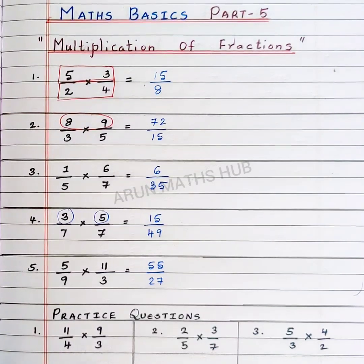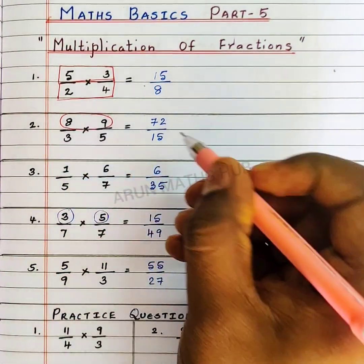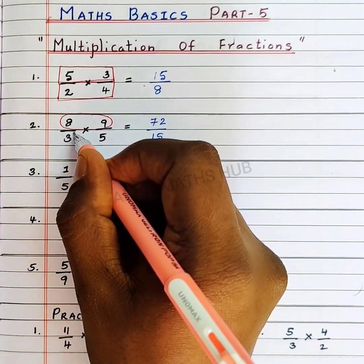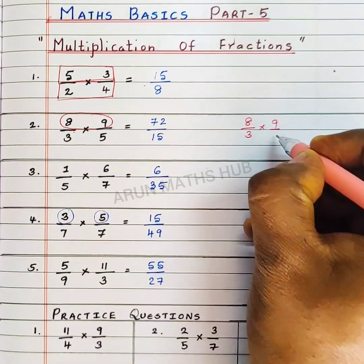And also, students, here you can directly divide. See, here in this example, second example, there is a common factor, 8 by 3 into 9 by 5.